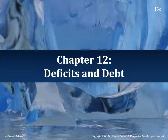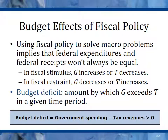Deficits and Debt, Chapter 12. In this chapter we're going to talk about the budget effects of fiscal policy. Using fiscal policy to solve macro problems implies that federal expenditures and federal receipts won't always be equal. We're going to have to spend more than we bring in to implement Keynesian fiscal policy. And when you spend more than you bring in, you create a budget deficit.